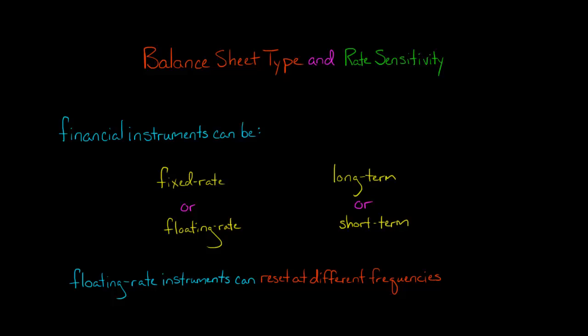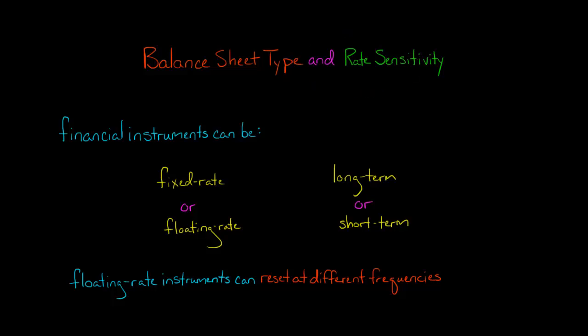How a bank's net interest income reacts to changes in interest rates depends on the balance sheet type for that bank. A bank's balance sheet type could be asset sensitive or it could be liability sensitive. Before getting into the details, the question is why would we have these different balance sheet types for banks?